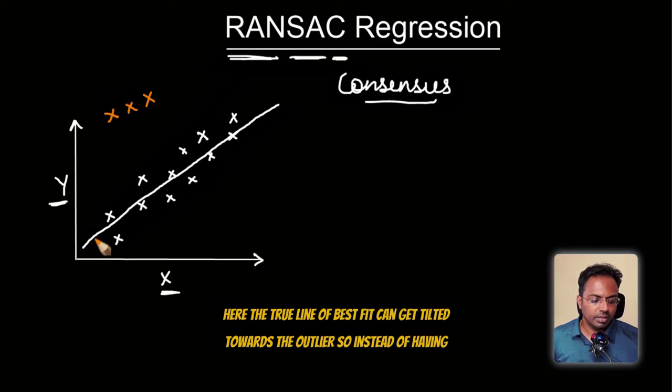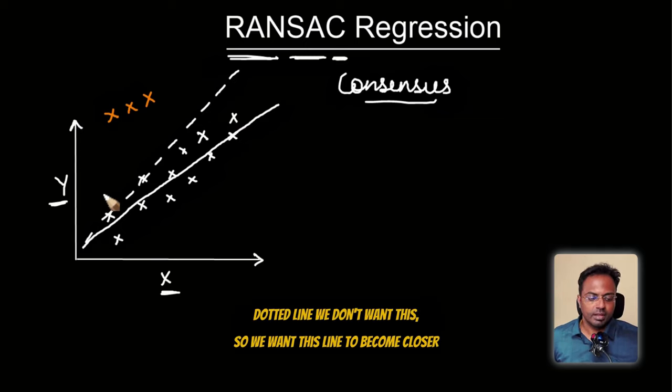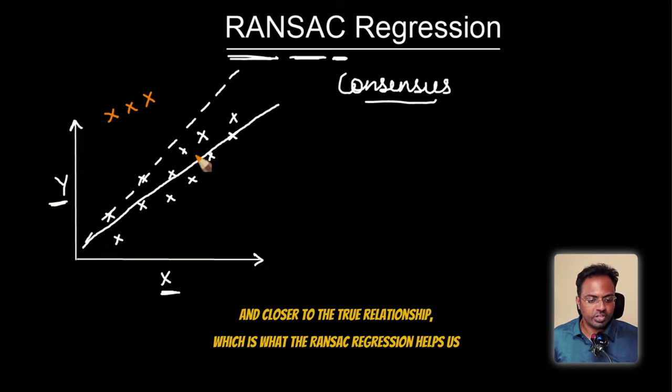The true line of best fit can get tilted towards the outliers. So instead of having that true line of best fit, true relationship, you might get the line of best fit to be this dotted line. We don't want this. So we want this line to become closer and closer to the true relationship, which is what the RANSAC regression helps us achieve.